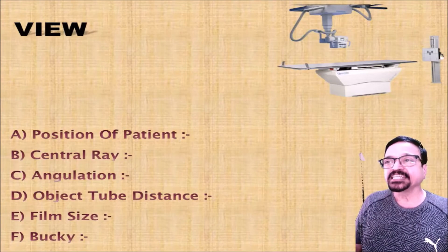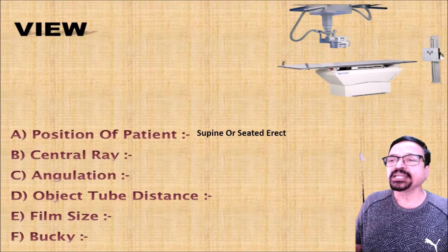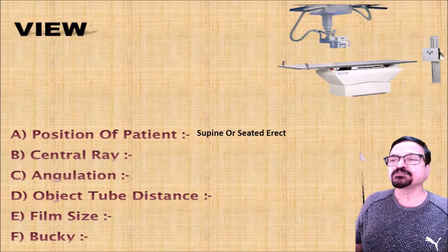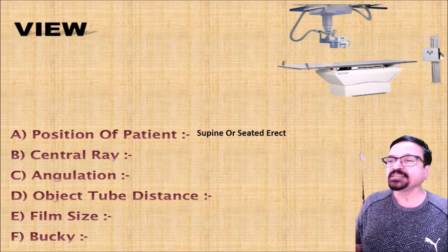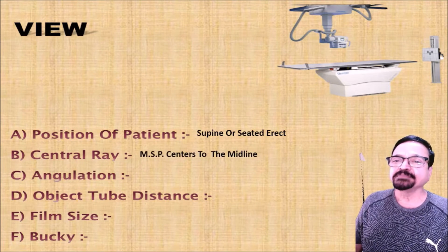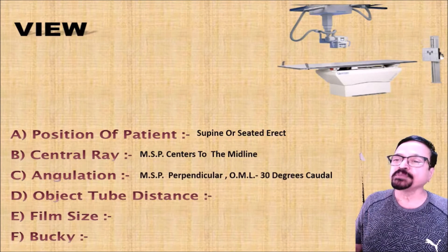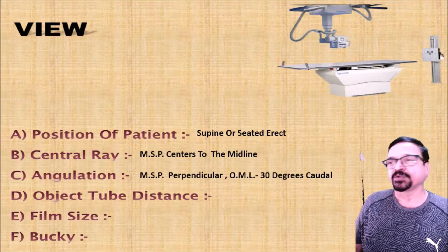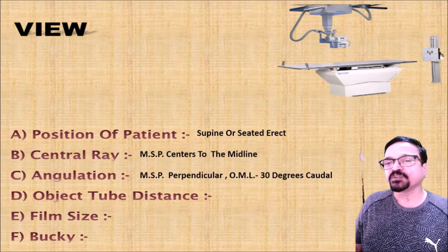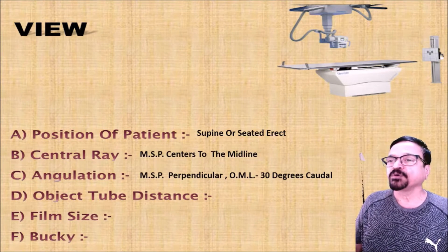This is a key chart for you to keep as a reference guide. The position of the patient is supine or seated, because it is an AP projection. The X-ray beam comes from the anterior aspect — the frontal region — and exits through the posterior aspect, which is the occipital region. The central ray is centered to the midline along the sagittal plane, perpendicular to the orbitomeatal line with 30 degrees caudal angulation. This 30 degree caudal angle is used to project the petrous ridges over the foramen magnum and the base of the skull.